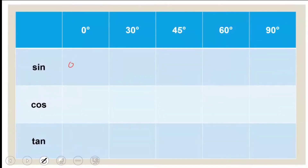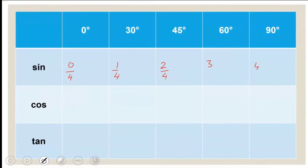Write the numbers 0, 1, 2, 3, and 4. Then divide each one of them by 4: 0/4, 1/4, 2/4, 3/4, and 4/4.